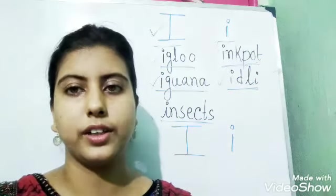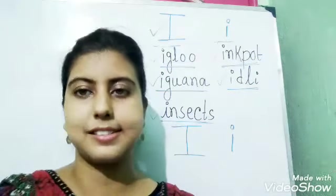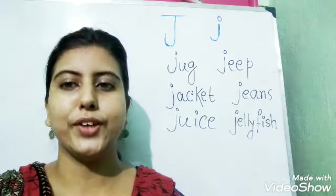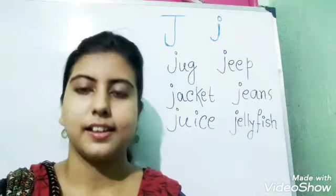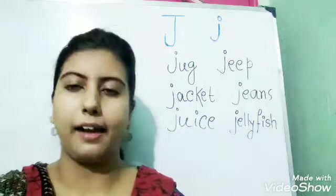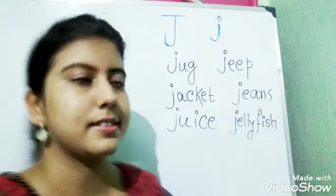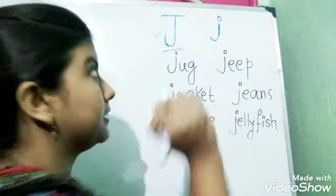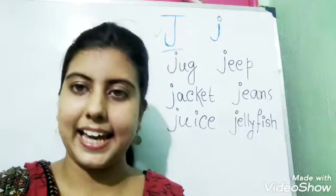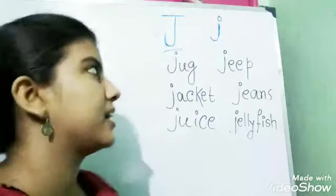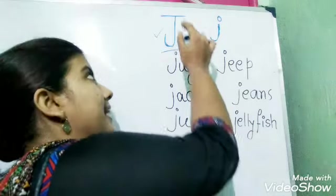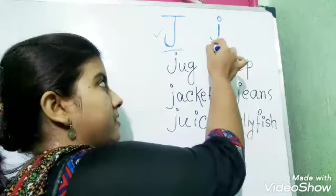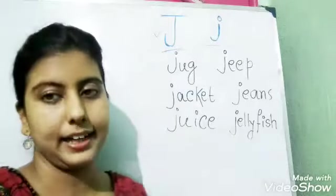Now we will learn the next alphabet — today's last alphabet. That is this one. This is J. This is capital J and this is small j.